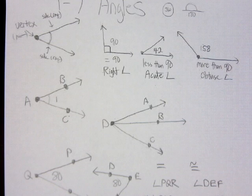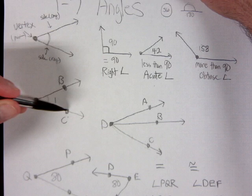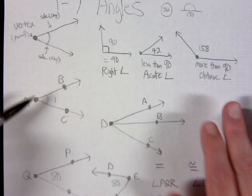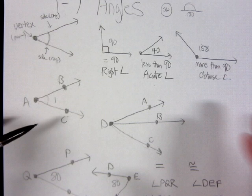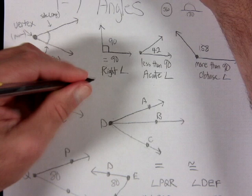Now we want to make sure we know how to name angles correctly. If I have an angle where point B is on one ray, the vertex is point A, and point C is on the other ray, I can name this angle as long as I have the vertex labeled and one point on each ray.